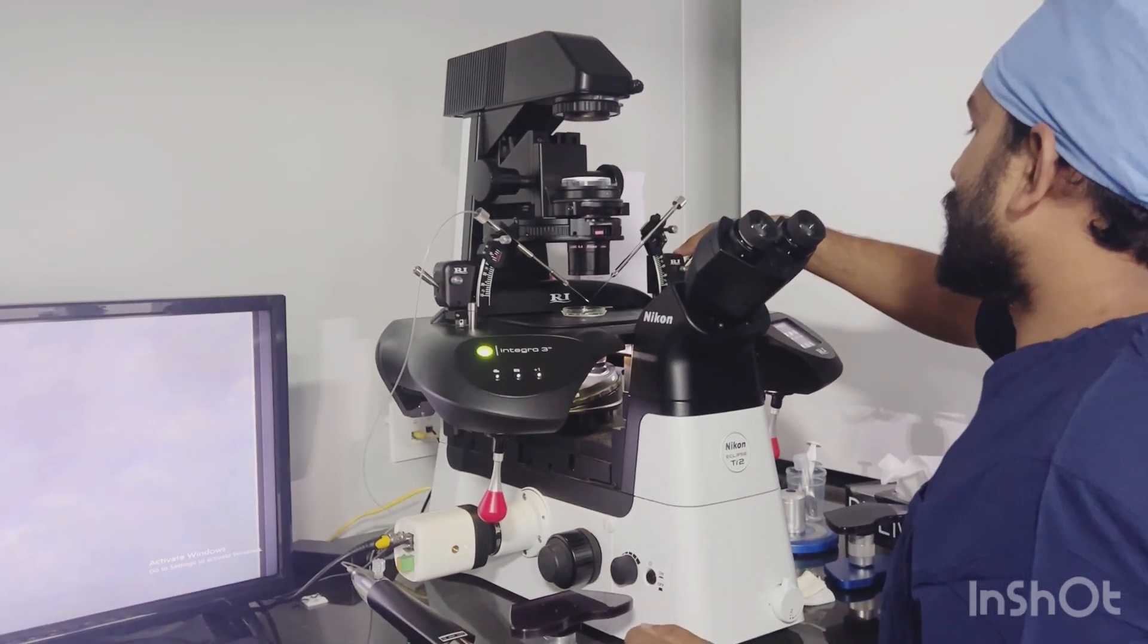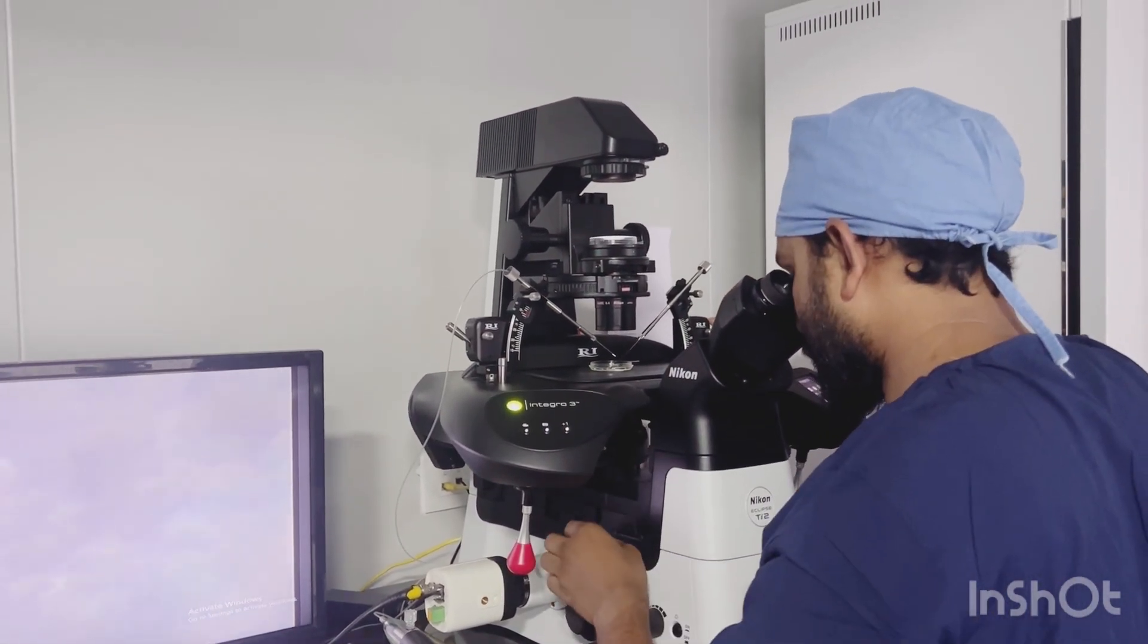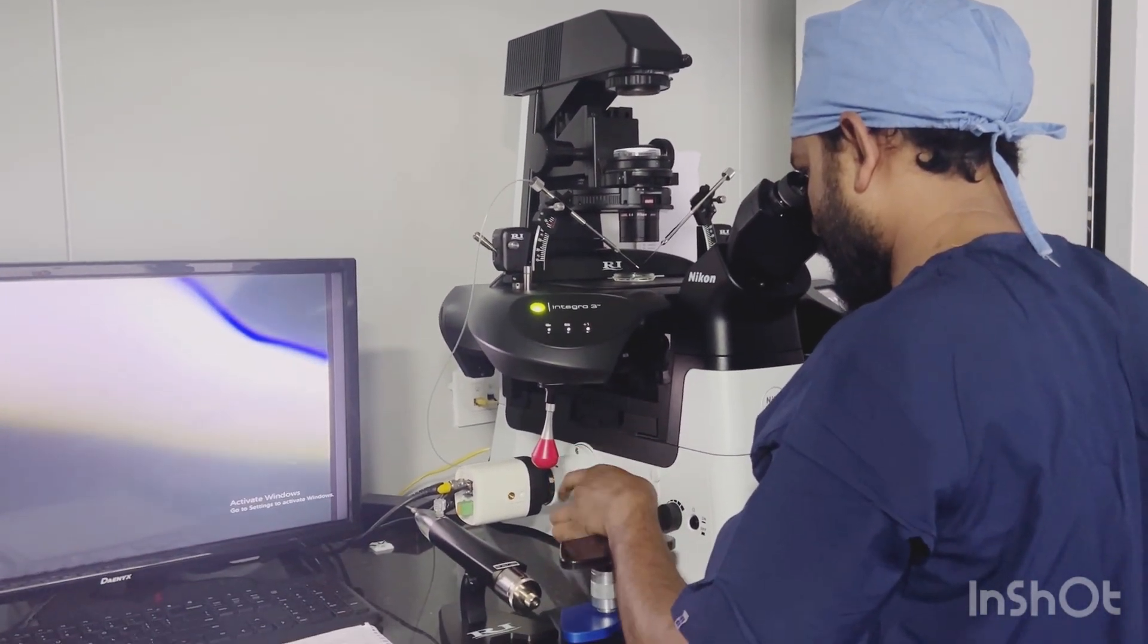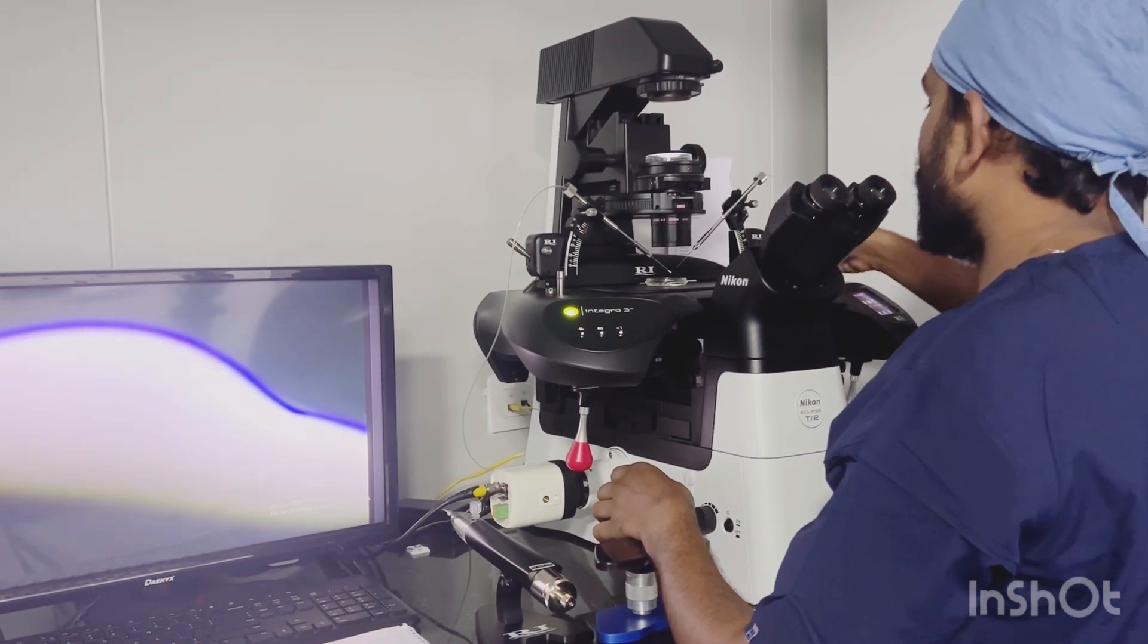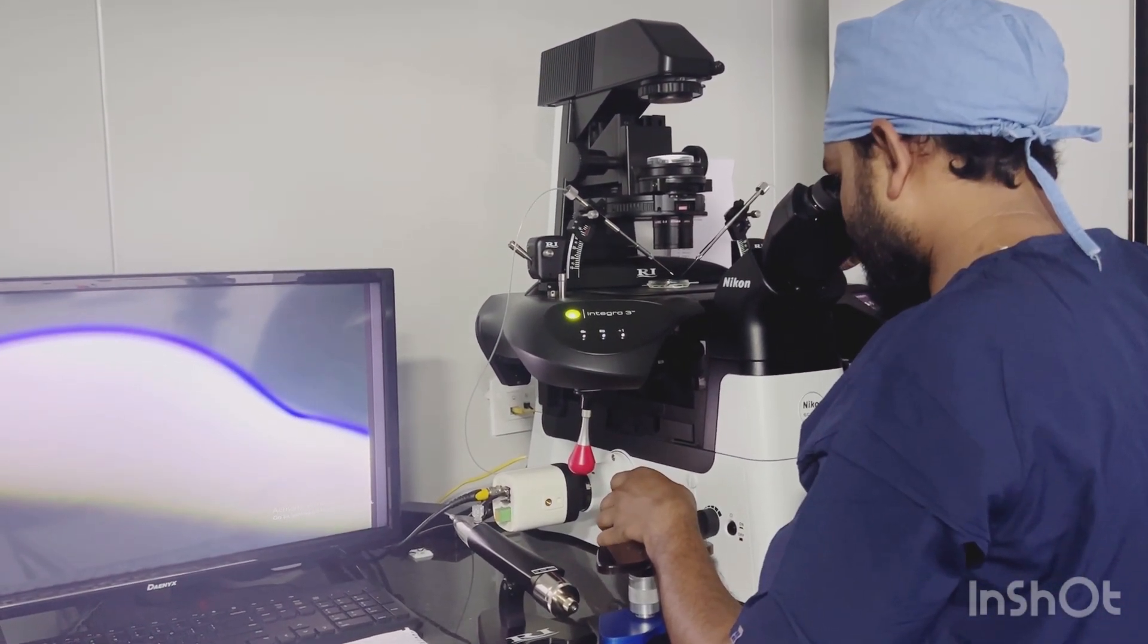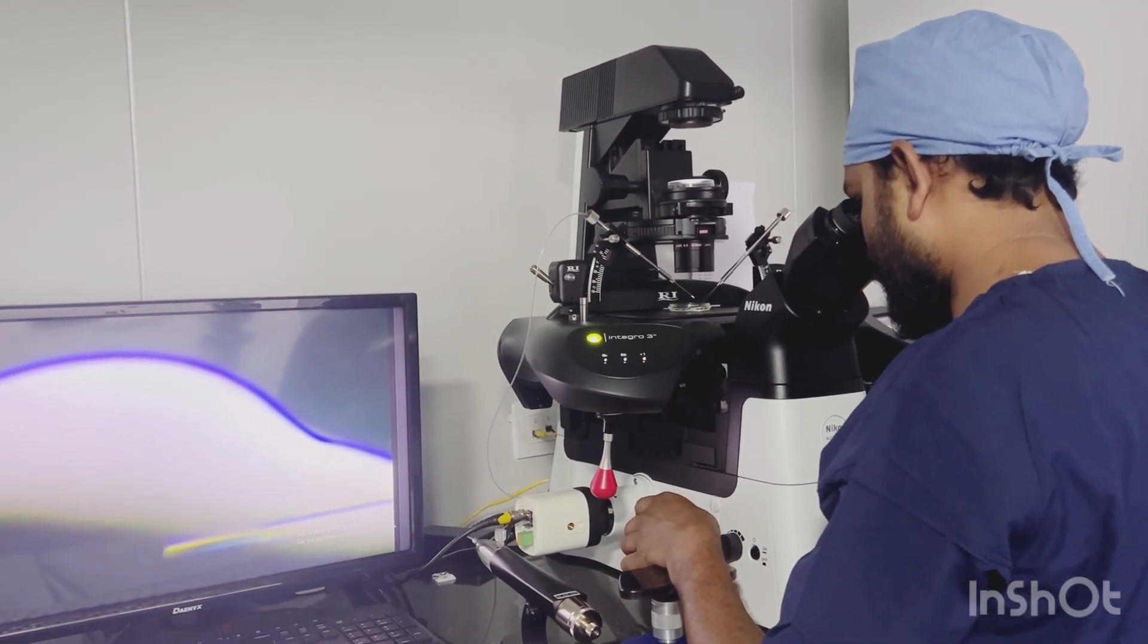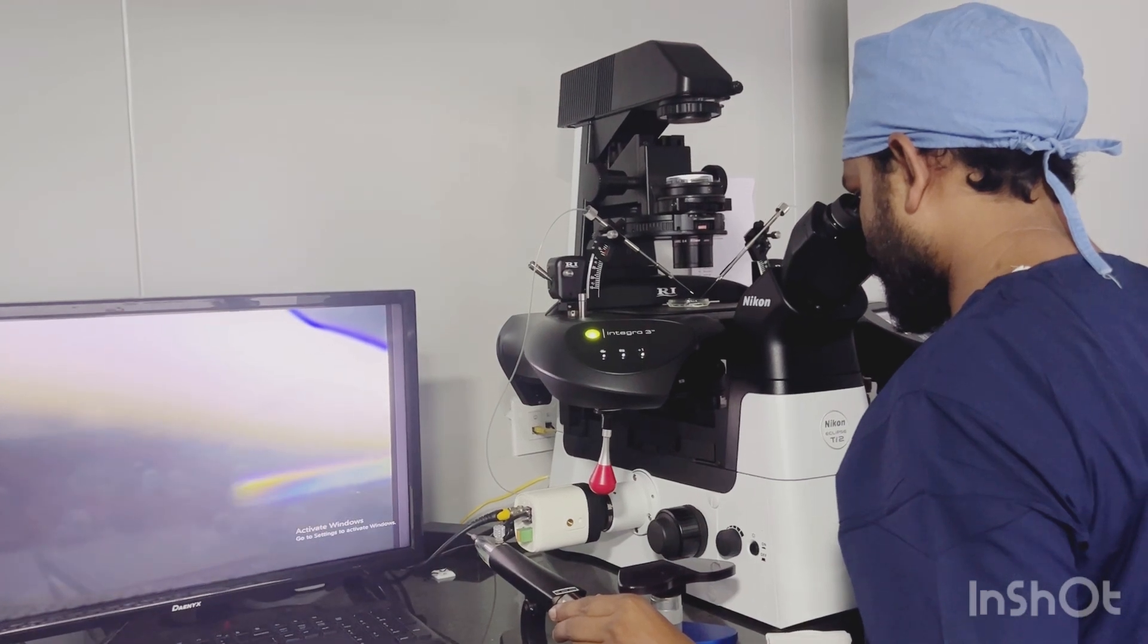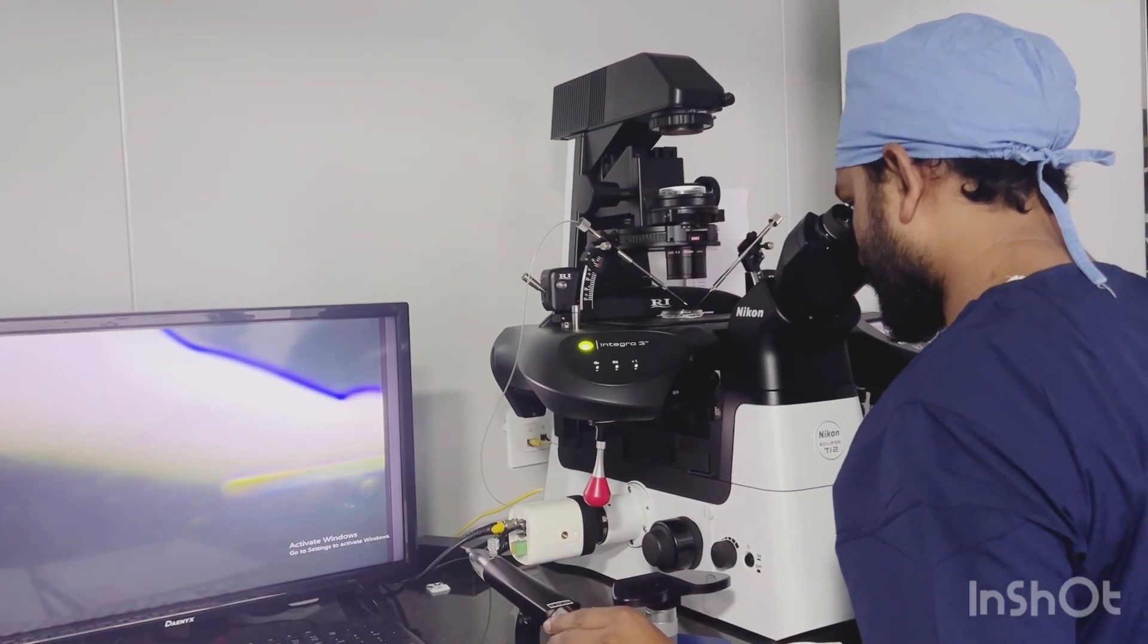Then we have to lower this lever. At the 4x, we can see our PVP drop. We lower our injecting lever - this is our injecting pipette.